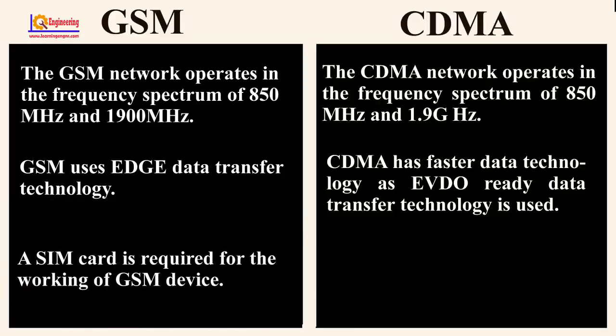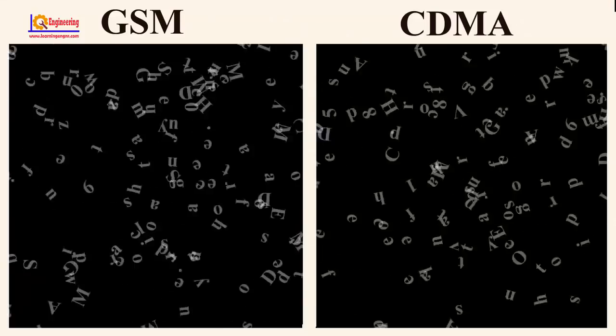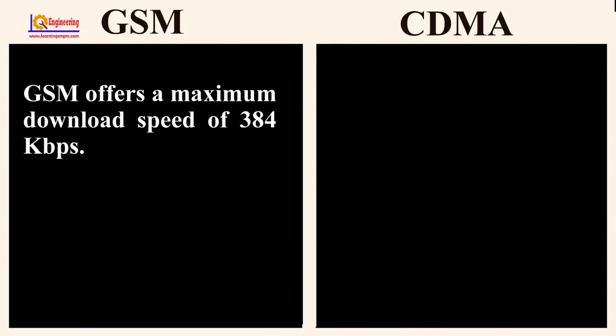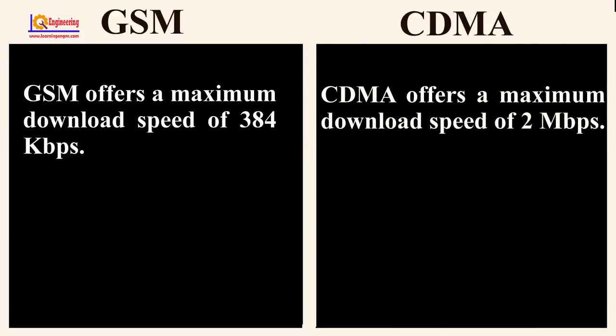A SIM card is required for the working of a GSM device. CDMA phones do not have this feature. GSM offers a maximum download speed of 384 KB per second, while CDMA offers a maximum download speed of 2 MB per second.